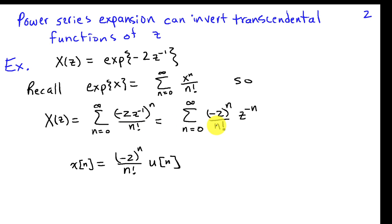And that simplifies to negative 2 to the N divided by N factorial times Z to the minus N. So the coefficient that's in front of Z to the minus N is X of N.